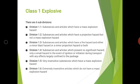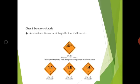Division 1.3 includes substances which can cause fire hazard or minor blast or projection hazard. Division 1.4 includes substances which can result in small ignition or initiation of fire during transport or when packaging. Division 1.5 covers insensitive substances with a mass explosion hazard, and 1.6 includes extremely insensitive articles which do not have a mass explosion hazard. Examples of class 1 explosives include ammunition, fireworks, and airbag inflators.